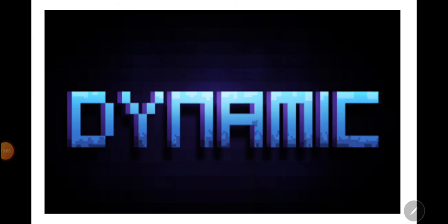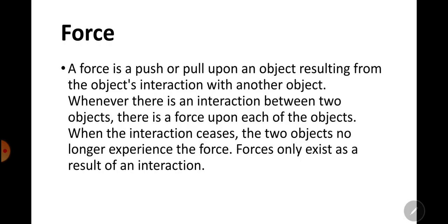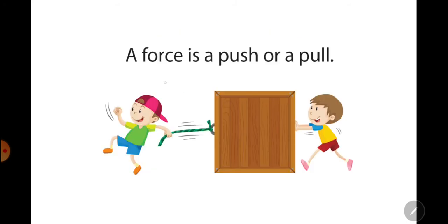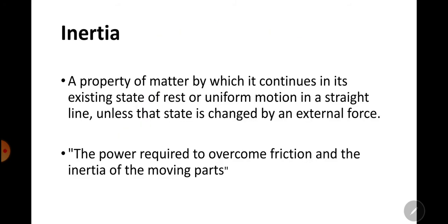Summary of the chapter: we start from dynamics — the study of motion and its causes. We explained force as anything which produces acceleration, or a push or pull, or an agent which changes or tends to change the state of an object. Then we studied inertia — the property due to which it opposes change of state.